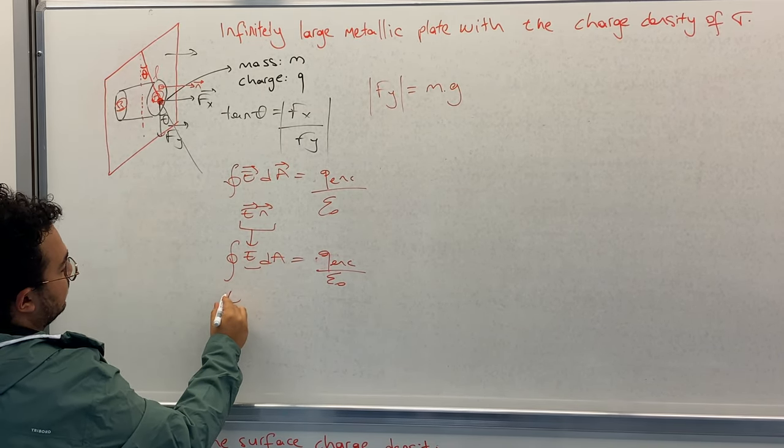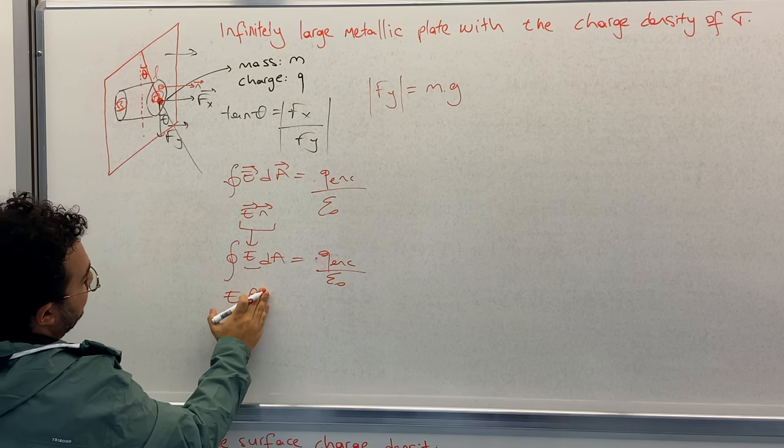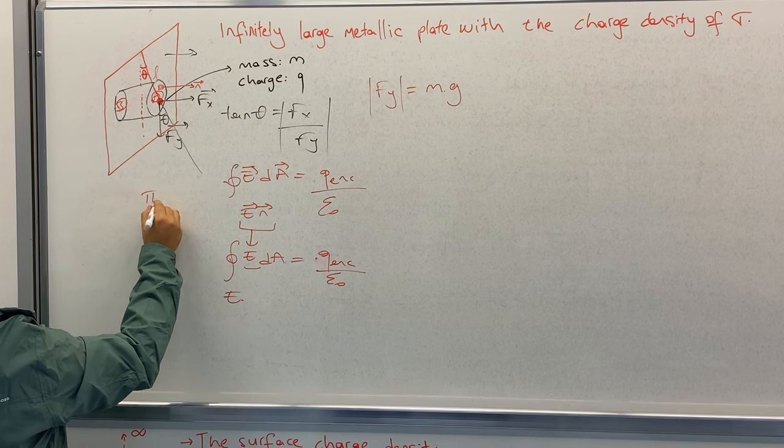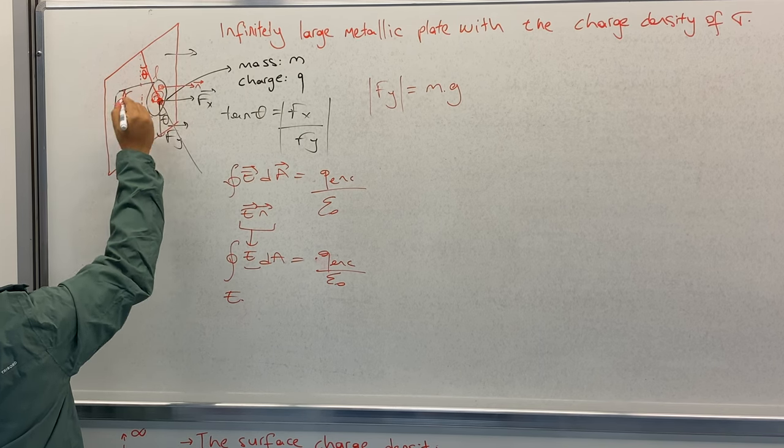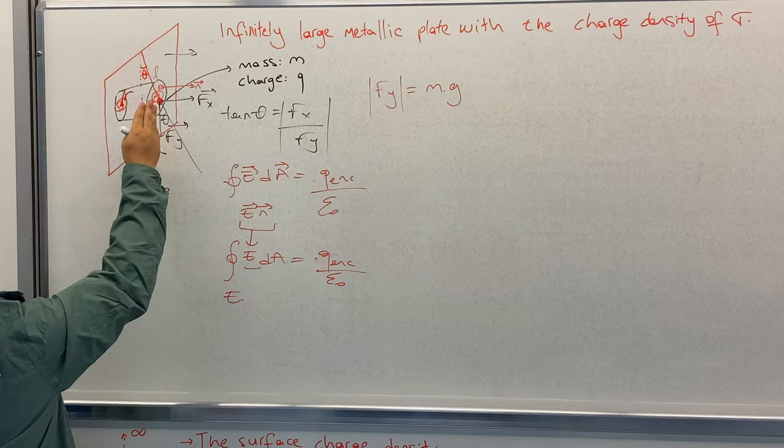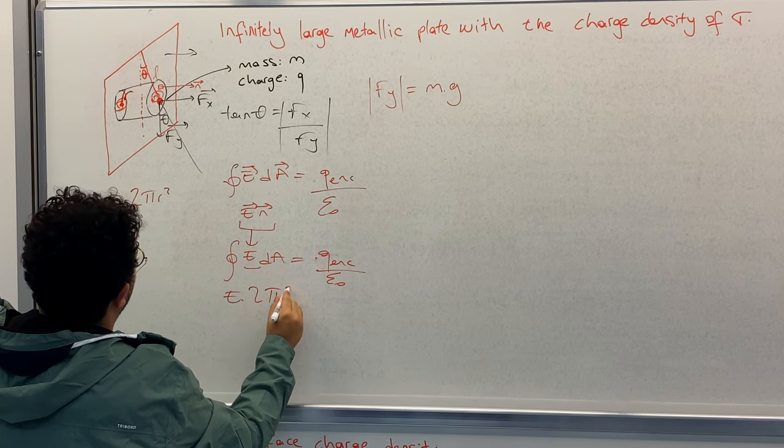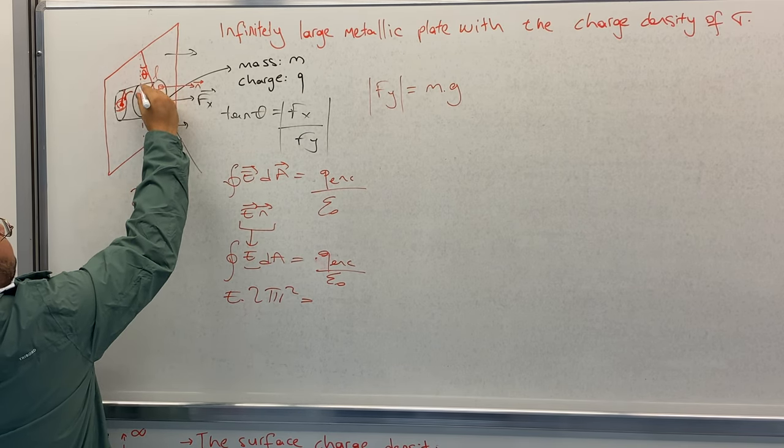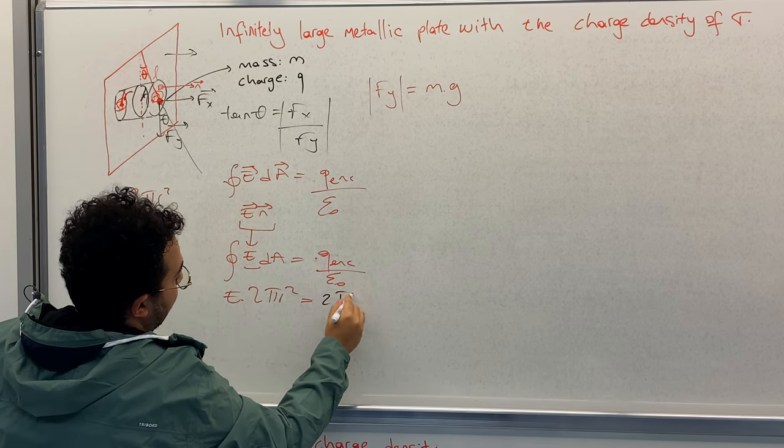Again, this is the dA, we have a normal vector, so this is just E. E·dA equals to Q enclosed divided by epsilon zero. This is constant, so E goes to outside, integral of dA is A. I will just write A in this step. A is πr², but you need to pay attention that we have 2πr² on both sides.